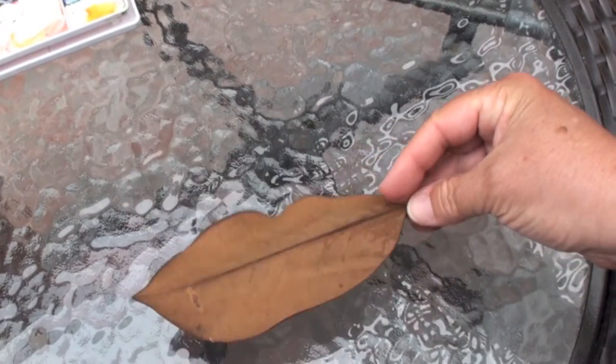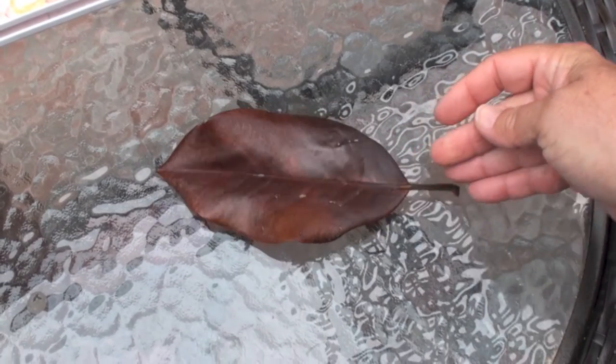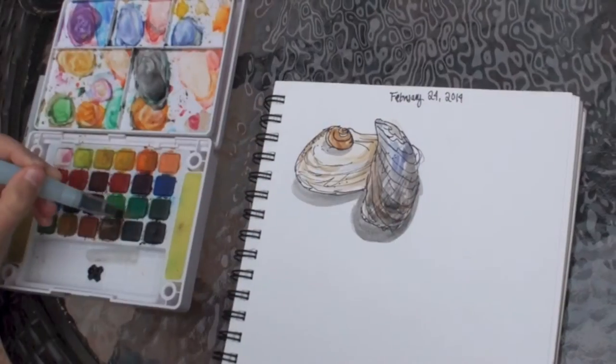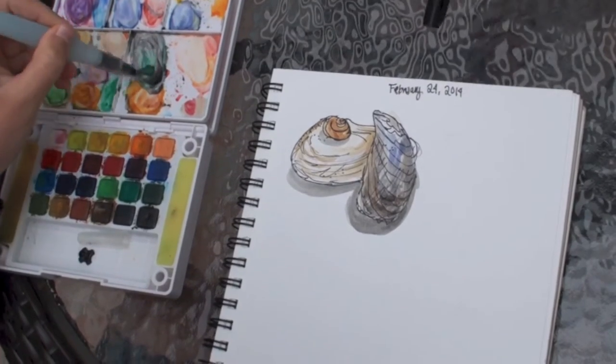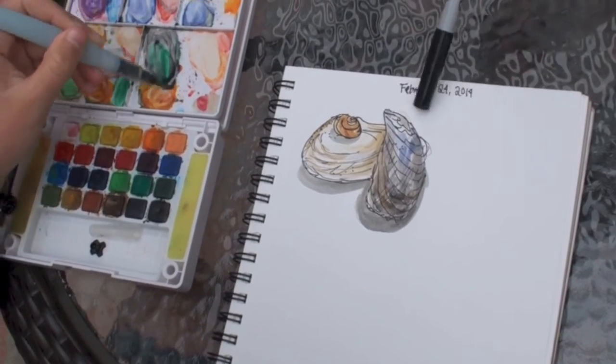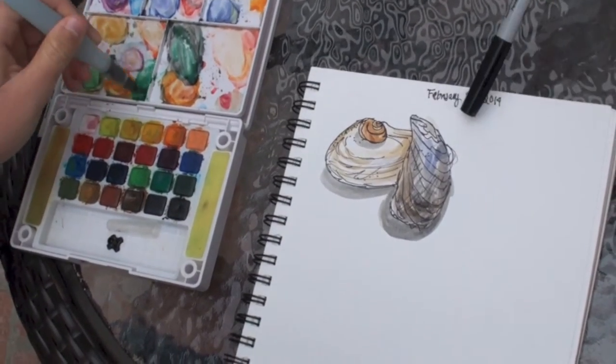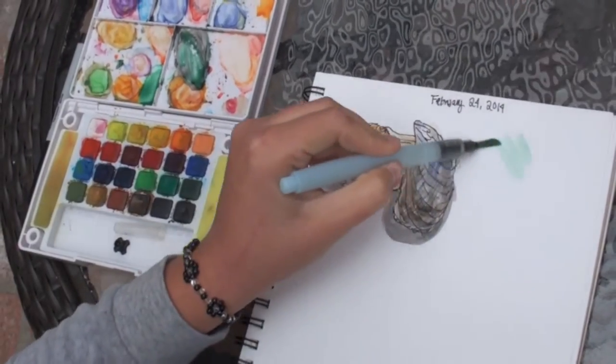Even something as simple as a leaf can make an object that brings a memory to your journal. So Louise has drawn her illustration, and now she's going to go in and just start journaling. Write some sentences about her day and this object, what made it catch her eye.